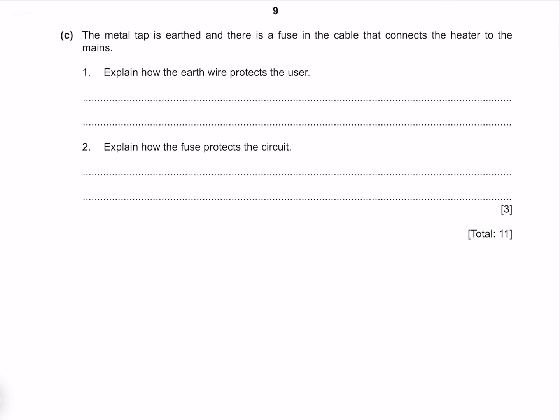The metal tap is earthed and there is a fuse in the cable that connects the heater to the mains. Explain how the earth wire protects the user. If the tap becomes live, the current will travel along the earth rather than through the user.